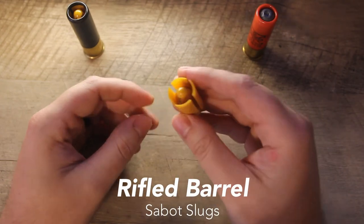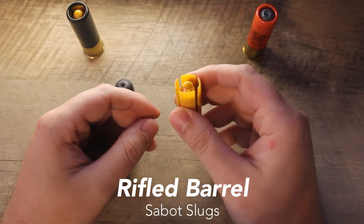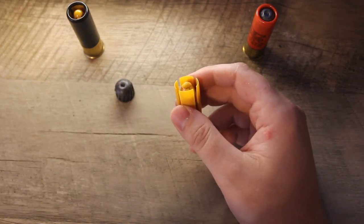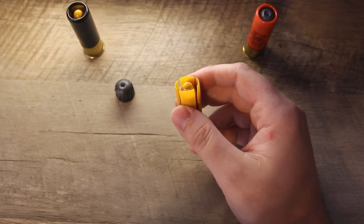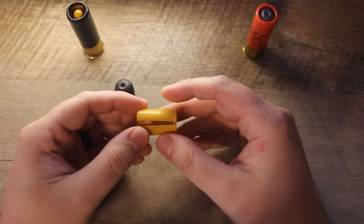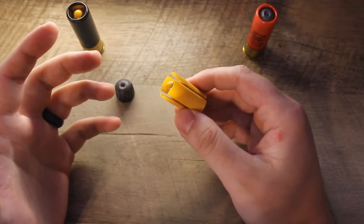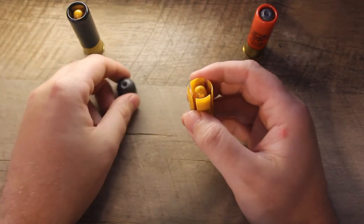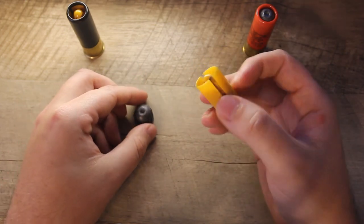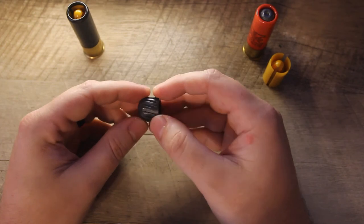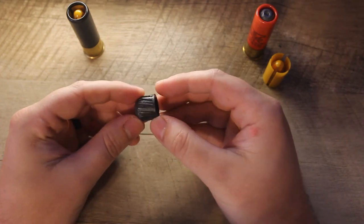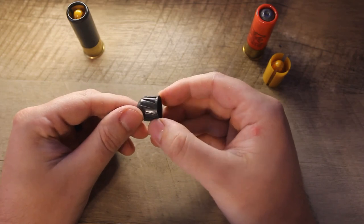Now you can use a sabot slug out of a smooth bore shotgun, but it's typically viewed by a lot of people as kind of a waste of money. You will get less than optimal performance than you would with a rifled slug out of a smooth bore. So again, these could be used out of a smooth bore, but it's recommended that you use one of these rifled slugs that has the rifling already built into the projectile.